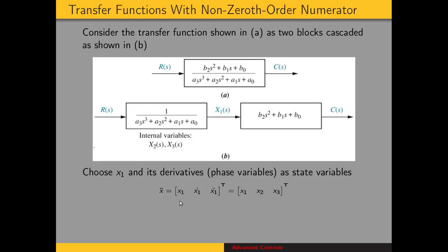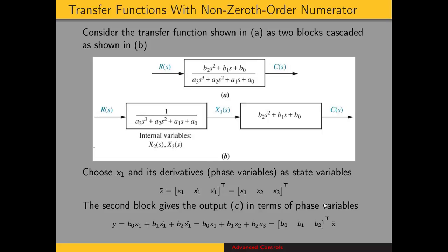We choose x_1 and its derivatives as the state variables. The state vector is x_1, x_1 dot, x_1 double dot, which we'll call x_1, x_2, and x_3. Then the second block gives us the output c in terms of the phase variables — multiplying x_1 times the second transfer function and taking the inverse Laplace transform gives us c in terms of x_1, x_1 dot, and x_1 double dot. I've called c as y here just to keep with the state space convention.